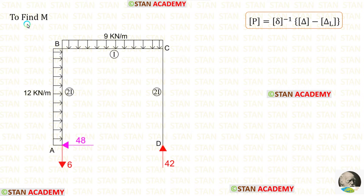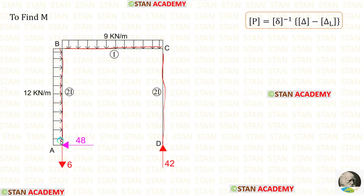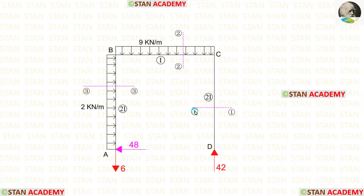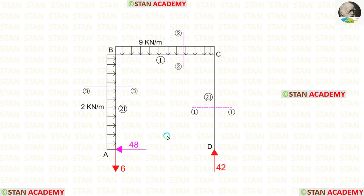Now let us find the bending moment M. We need to make sections in this frame. There are three different parts: DC, CB, and BA, so we make three sections. The first section is in DC, the second in CB, and the third in BA. Before finding the moments, let us make the free body diagram by splitting the frame at point C, giving two different parts.